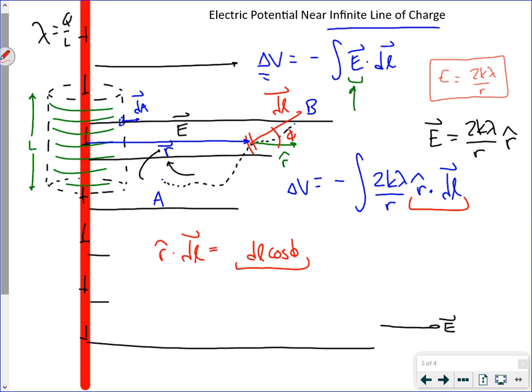So DL cos theta is the component of DL in the direction of R hat. That is DR. So R hat dot DL is DR. Little tiny, tiny in the direction of R hat.